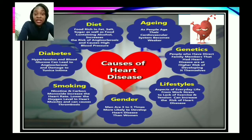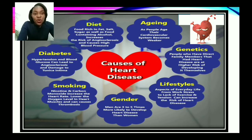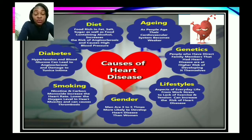Another cause is diabetes. Hypertension and high blood glucose can lead to arteriosclerosis and damage to the tunica intima, which is the inner lining of the arteries. We also speak of diet — foods rich in fat, salt, and sugar, as well as foods containing alcohol, all increase the risk of arteriosclerosis and cause high blood pressure. Arteriosclerosis refers to where the arteries become stiffened and hardened.